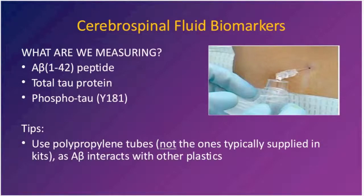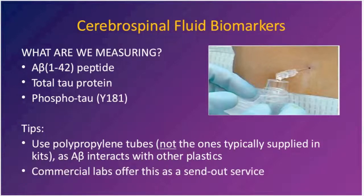Some tips about getting CSF biomarkers: amyloid beta in particular is a very sticky protein that sticks to the insides of many plastics, including those used in most lumbar puncture kits. The clear plastic tube in a standard kit is exactly the wrong tube to use for collecting spinal fluid for A-beta assessment. Polypropylene plastic, which you can request from your lab supplier, is the right kind — A-beta does not stick to that. Commercial labs, including Athena, will measure the levels of these proteins as a send-out service, and these tests are not experimental — they are commercially available tests you can order on your patients today.